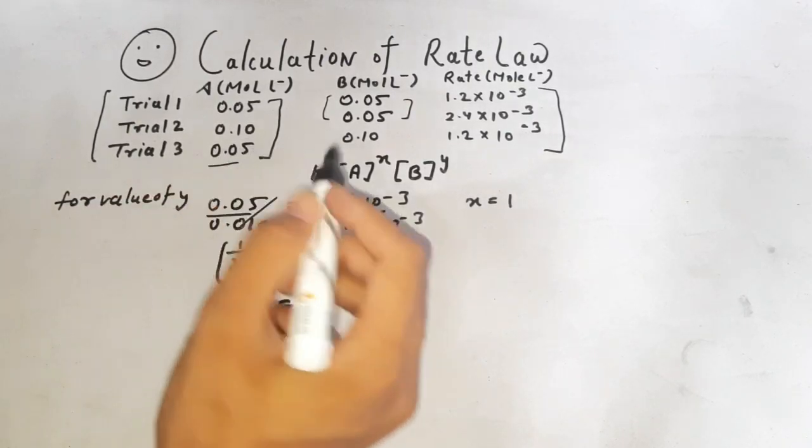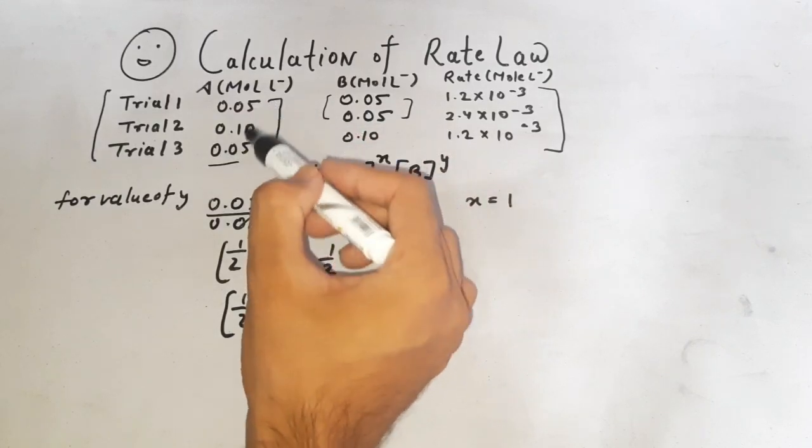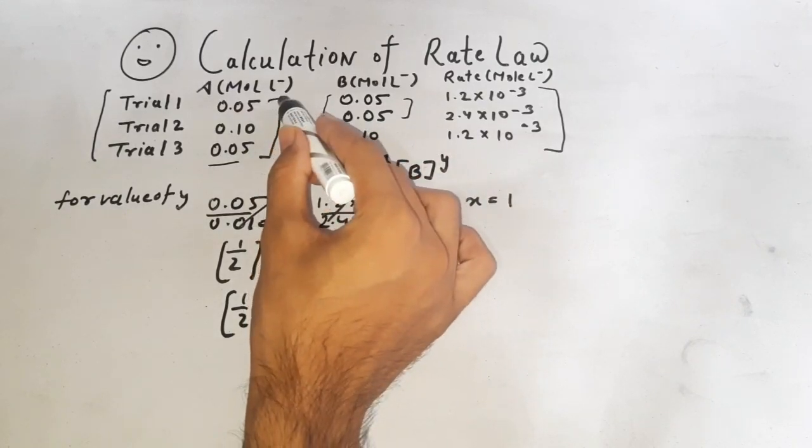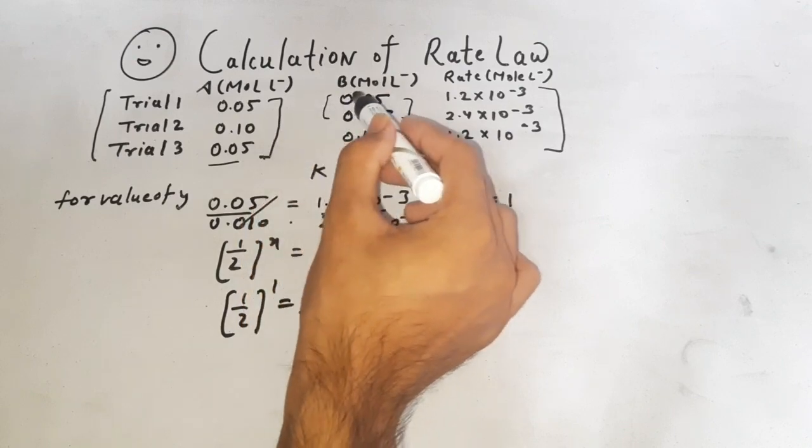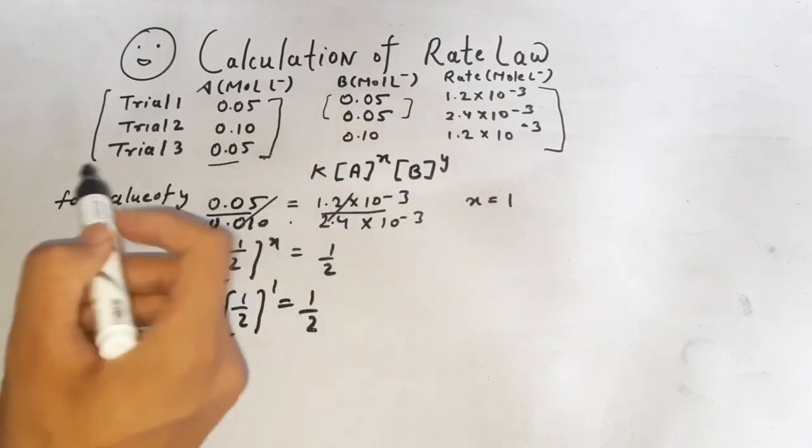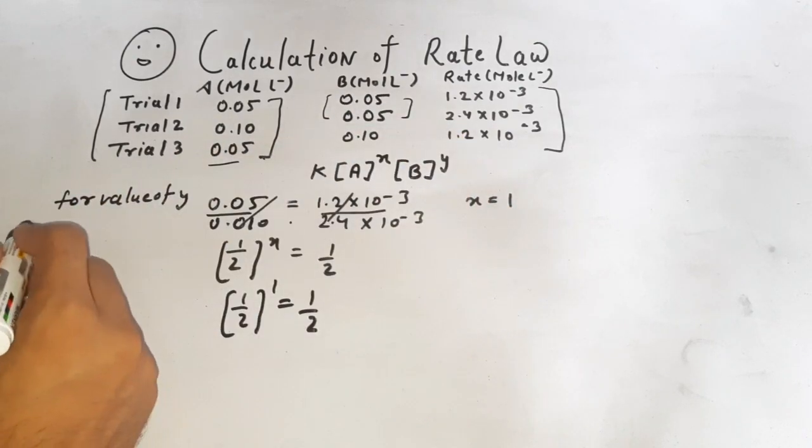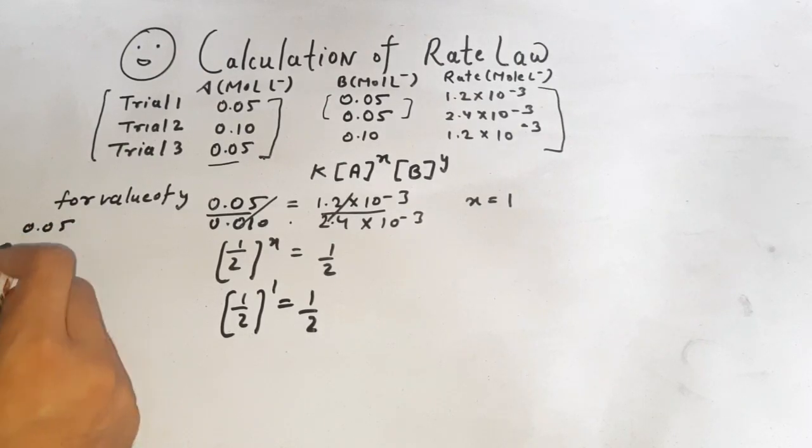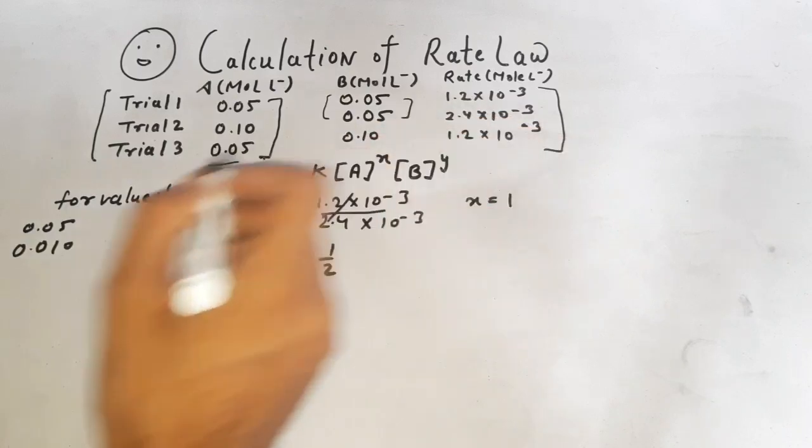Now for finding value of y, we assume a is constant. Now the value of y is 0.05 and 0.010 equals to...